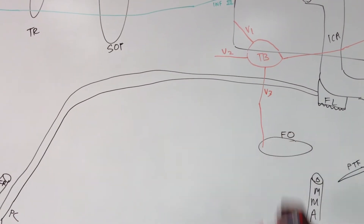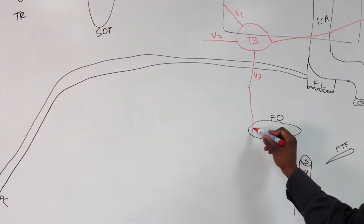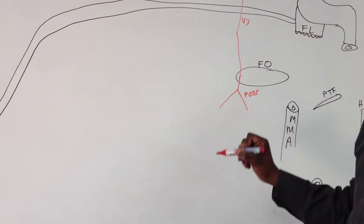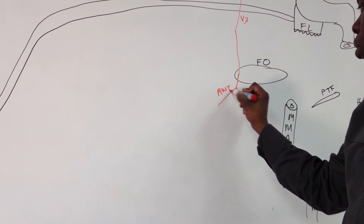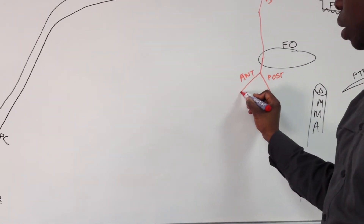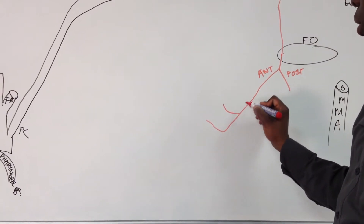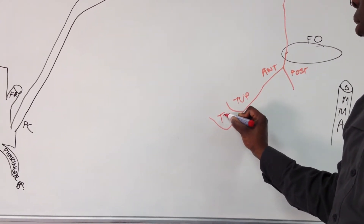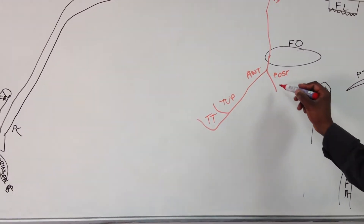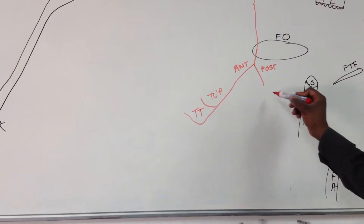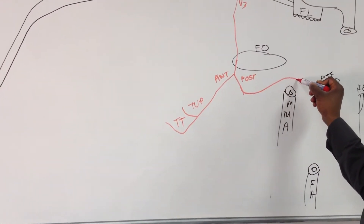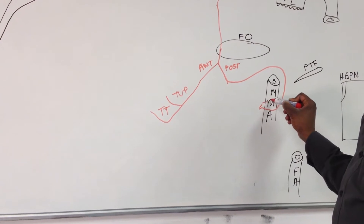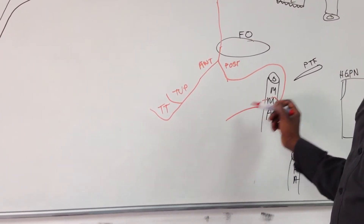V3 comes down through foramen ovale. As it comes through foramen ovale it's going to split — it's going to have a posterior division and an anterior division. The anterior division is mainly associated with muscles of mastication; the ones of note there are tensor veli palatini and tensor tympani. The posterior division is mainly sensory, and the most notable one is the auriculotemporal nerve, which whips around the mandible.